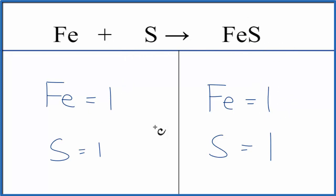We have one iron here and one here. Sulfur, one, one here. That means we're obeying the law of conservation of mass - we didn't create or destroy any atoms, and this equation is balanced.